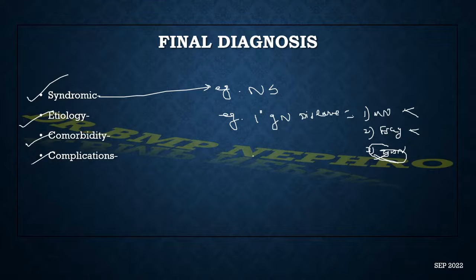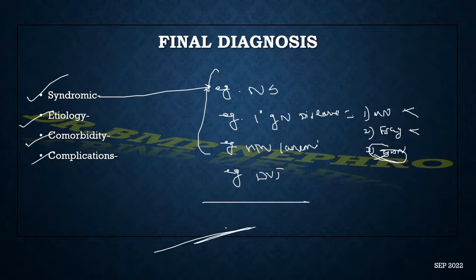And the patient is having hypertension, anemia with the signs of DVT. So how you have to tell: final diagnosis - syndromic diagnosis: nephrotic syndrome. Etiology: primary glomerular disease, first differential membranous nephropathy, with the comorbidity of hypertension and anemia, with complications of DVT. From here, the questions regarding treatment, investigation will go. But 90 percent of the final exam cases will be having questions revolving around prior to this step only.